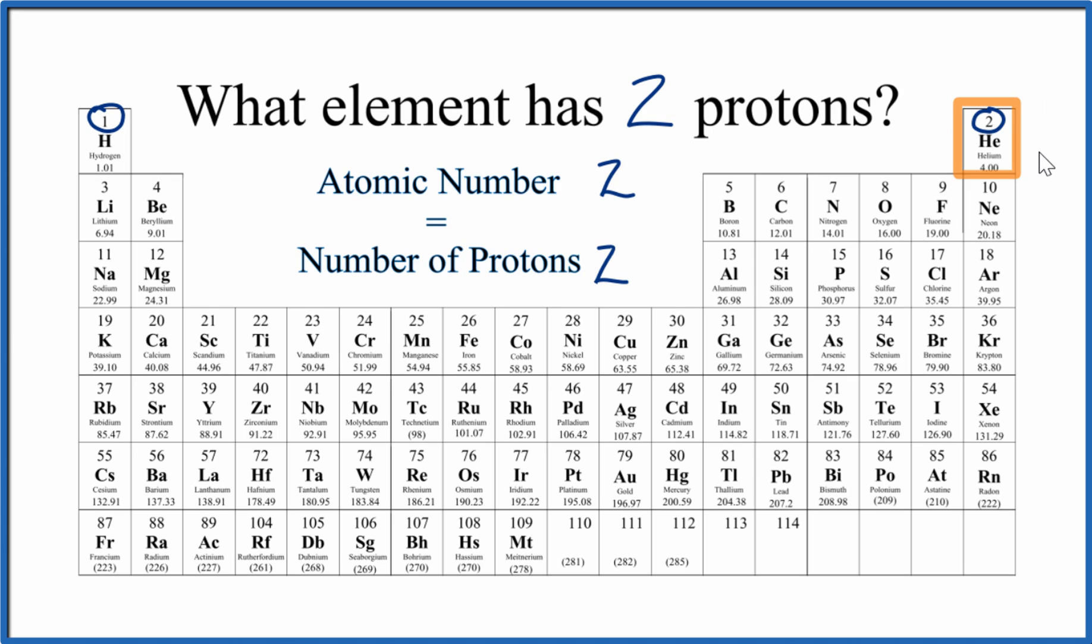We can use the atomic number to identify elements. Each element has a unique atomic number. For helium, it's two. That's its atomic number. And since the atomic number equals the number of protons, the element with two protons is helium.